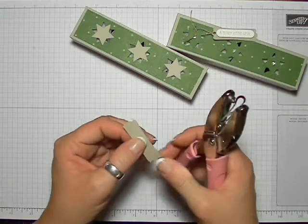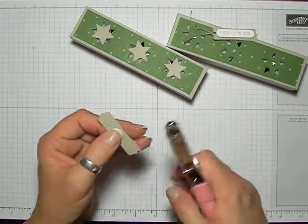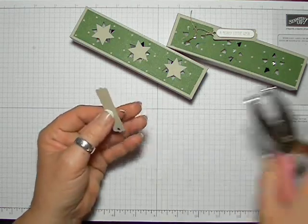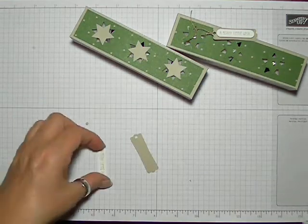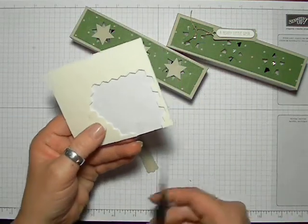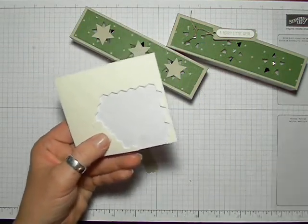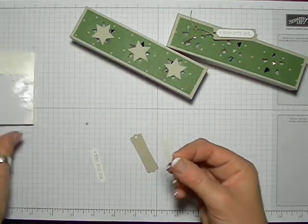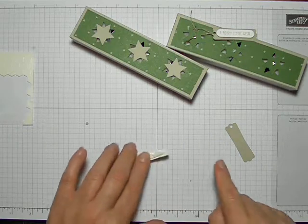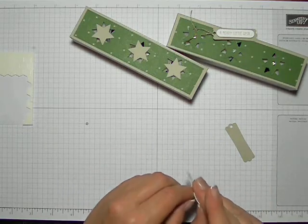And then a hole punch, not Stampin' Up, but I got it from a craft store somewhere. And again, I'm just going to take a little bit of the dimensionals, the edges.